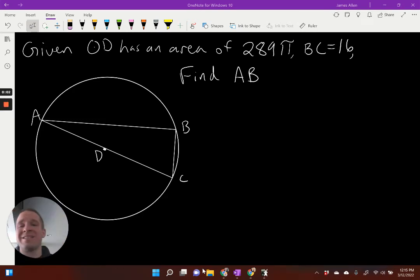So we have ourselves circle D here and it has an area of 289π. We know that BC is a length of 16. We want to find out what the length of AB is. Well, first off, I'll go ahead and just jot down that this guy is 16 right there. That's lovely. Now, what about this area of 289π? What can I figure out from that?